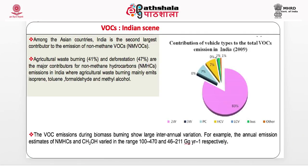Looking at the Indian scenario, based on 2009 data, 83 percent of total VOC emissions are from vehicular sources, primarily two-wheelers. India is the second largest contributor to non-methane VOC emissions among Asian countries. Agriculture waste burning contributes up to 40-41 percent, and deforestation is also a major contributor to non-methane hydrocarbon emissions in India. Agriculture waste burning mainly emits isoprene, styrene, formaldehyde, and methyl alcohol, with annual emissions showing large inter-annual variation.